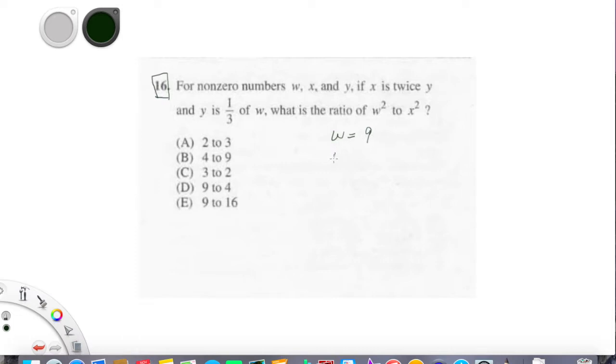Okay, so w is 9. y is one-third of w, so y is, therefore, 3. And x is twice y, so we're going to make x twice as big as y, 6.